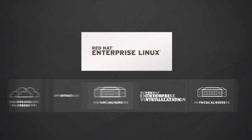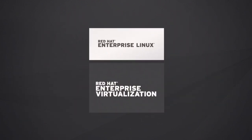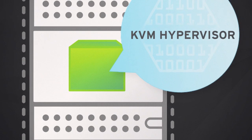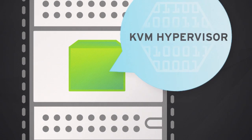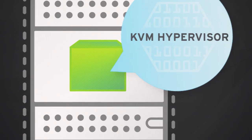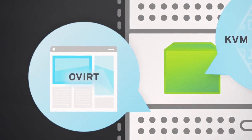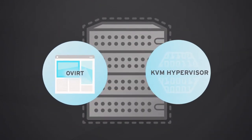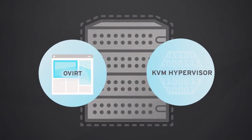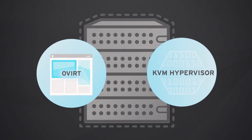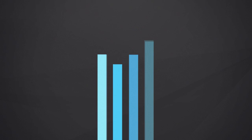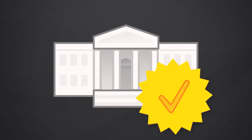Red Hat Enterprise Linux runs best on Red Hat Enterprise Virtualization, which uses the powerful and ubiquitous kernel-based virtual machine, or KVM, hypervisor, and oVirt, a virtualization management platform. Both KVM and oVirt are successful open-source projects led by Red Hat.